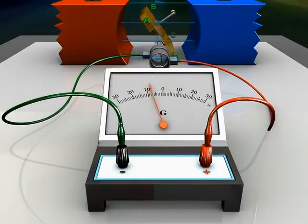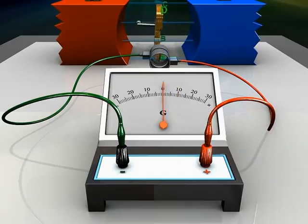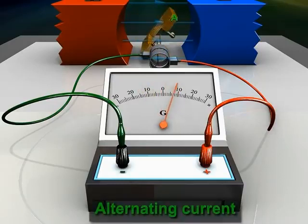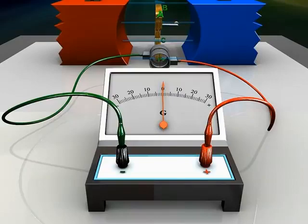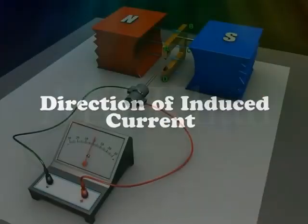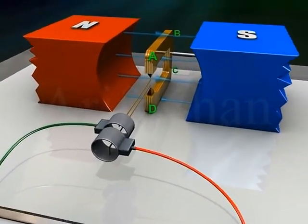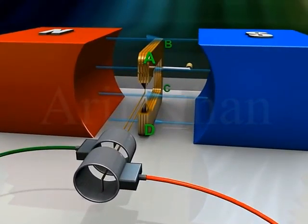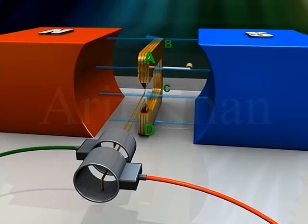The galvanometer needle swings between the negative and positive values, meaning that an alternating current is flowing through the galvanometer. To understand the direction of induced current: the armature ABCD is vertical with its arm AB up and CD down, and the direction of the magnetic field is from left to right.